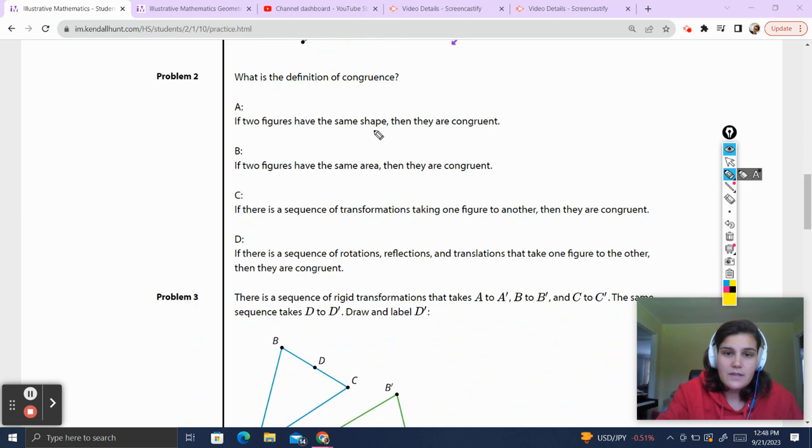A, if two figures have the same shape, they are congruent. So part of me likes this definition, but I think that's a triangle. That's a triangle. That's the same shape. And they're definitely not congruent. So that's not specific enough. If two figures have the same area, they are congruent. Well, this triangle and this square could theoretically have the same area and they would not be congruent. So that's not a good enough definition either.